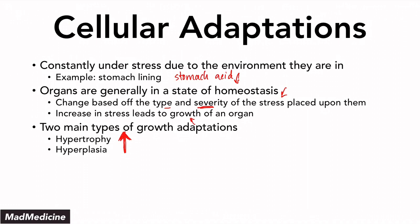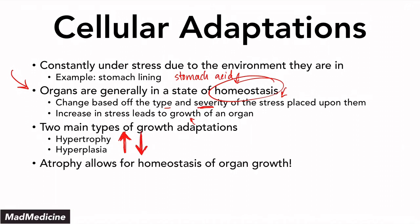So let's say you remove the stressor. Eventually, the organ now has to decrease its size, because we said earlier that organs are in a general state of homeostasis. So because you have increased the size but then removed the stressor, the organ does not need to remain that large to function properly. It's going to go through a process called atrophy to shrink its size, and atrophy allows for homeostasis of organ growth — that's very important.